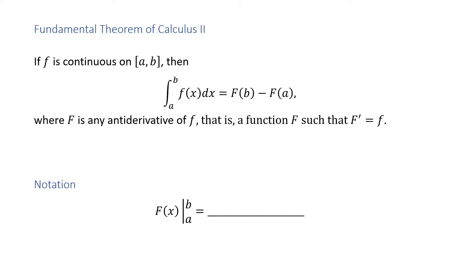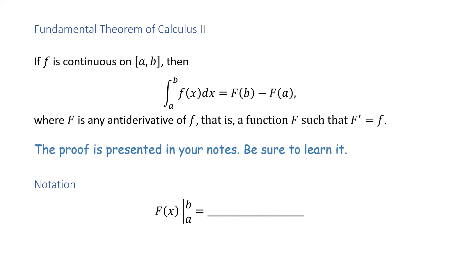Fundamental Theorem of Calculus Part 2: if lowercase f is continuous on the closed interval from a to b, then the integral from a to b of lowercase f of x dx is equal to uppercase F of b minus uppercase F of a, where uppercase F is any antiderivative of lowercase f — that is, a function uppercase F such that uppercase F prime equals lowercase f. The proof is presented in your notes; be sure to learn it. The notation uppercase F of x evaluated from a to b can also be written as uppercase F of b minus uppercase F of a.